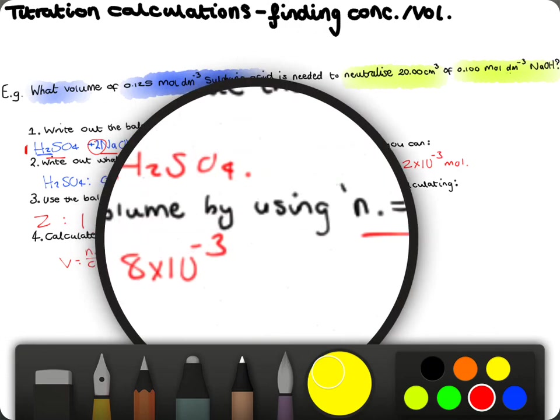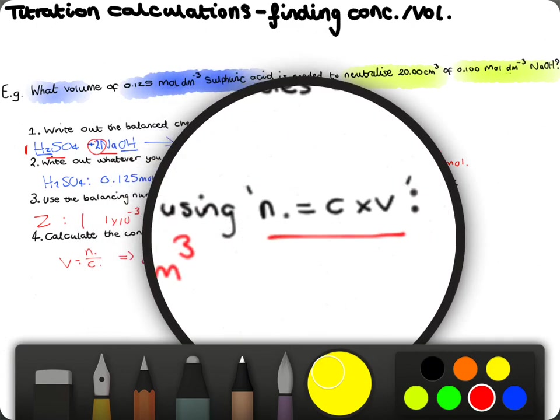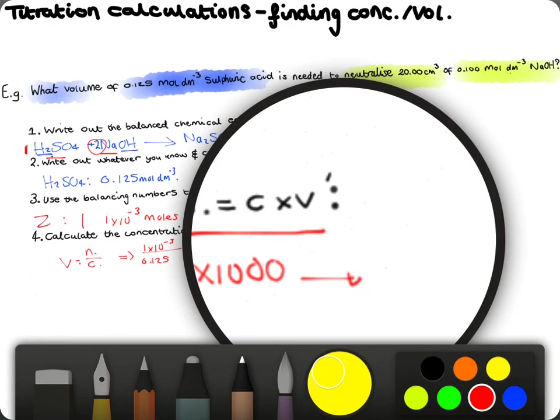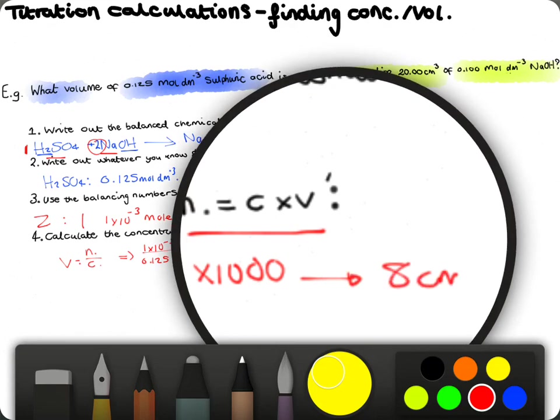And I would recommend at this stage you do convert your answer back into centimetres cubed. And this is quite simple, though, so don't get too worried. It's just timesing by 1,000. And then, this gives us the answer of 8 centimetres cubed.